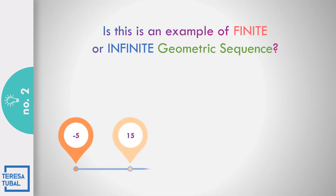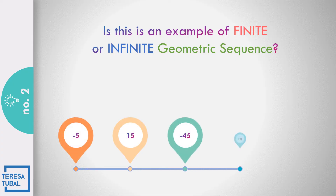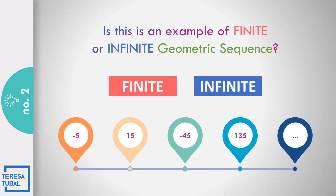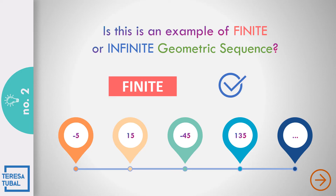How about number 2? Finite or infinite? The sequence is: negative 5, 15, negative 45, 135, and the three dots (ellipsis). The answer is infinite, because we have the first term but the last term is continuous — it goes on without end after 135.